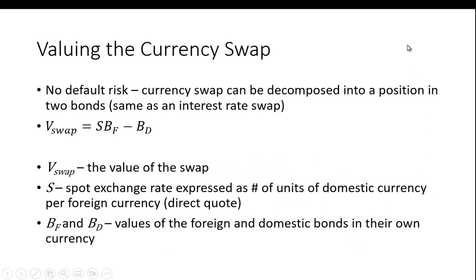How do you do the valuation? If there's no default risk, the currency swap can be decomposed into a position in two bonds, the same as an interest rate swap. The value of the swap equals S, the spot exchange rate, expressed as the number of units of domestic currency per foreign currency — how many dollars it takes to buy a yen. From a US perspective, that's called a direct quote, or an American quote. You need to be careful because exchange rates can be quoted two ways.